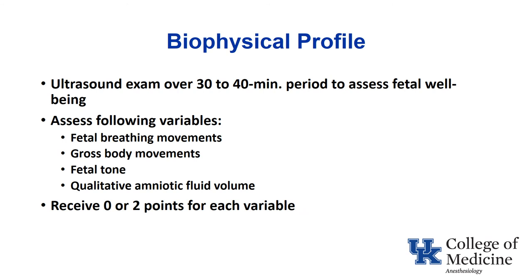The biophysical profile, or BPP, is essentially an ultrasound exam where they sit with the ultrasound for 30 to 40 minutes looking at the baby. They're looking for fetal breathing movements, gross body movements, fetal tone — which is extension and returning back to flexion — and amniotic fluid volume. The first three are signs of acute fetal status, while amniotic fluid volume reflects what's going on chronically. For each variable, you get either two points if normal or zero points if not.